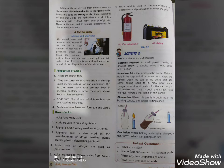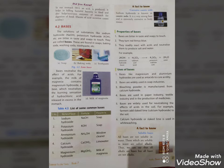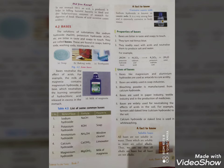My next topic is: what is a base? The solution of substances like sodium hydroxide, potassium hydroxide, etc. are bitter in taste and soapy to touch — they are called bases. These are found in soap, baking soda, washing soda, toothpaste, etc. And one more thing — sodium hydroxide is also known as caustic soda, and it is a very strong base.